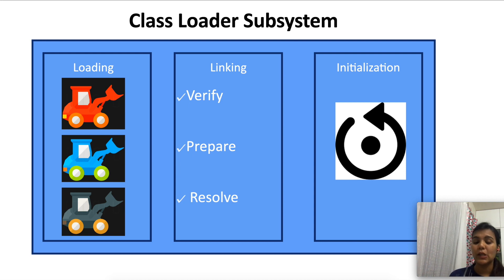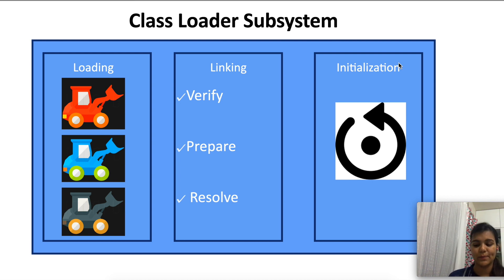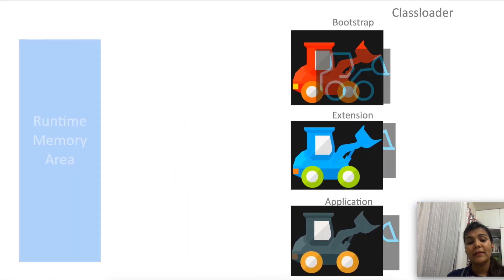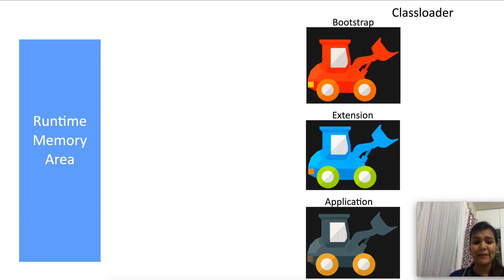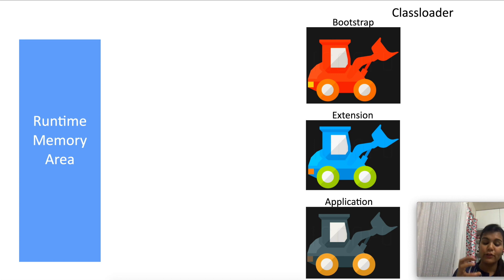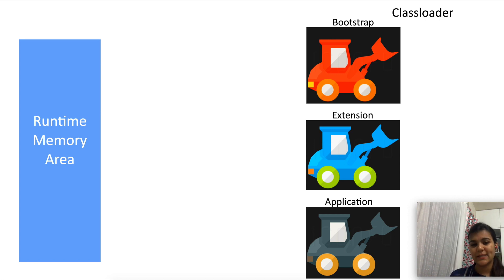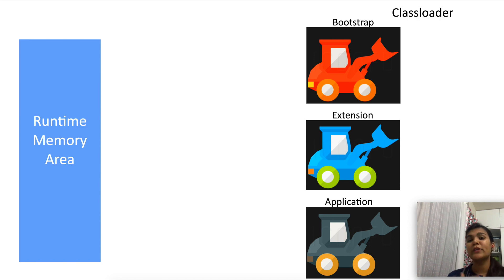The class loader subsystem is divided into three phases: loading, linking, and initialization. Loading is basically the creating of a binary representation of a class — it creates a chunk of bytes in the form of a class file and then introduces this chunk of bytes to the JVM as the implementation of that class file. We have three class loaders that perform the loading of different kinds of .class files.